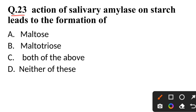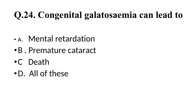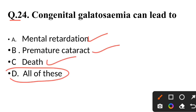Question 23: Action of salivary amylase on starch leads to the formation of — correct answer is both maltose and maltotriose. Question 24: Congenital galactosemia can lead to — correct answer is all of these: mental retardation, premature cataract, and death.